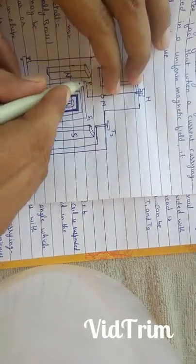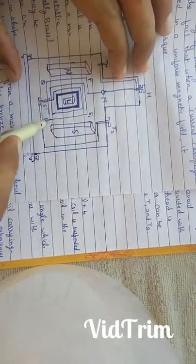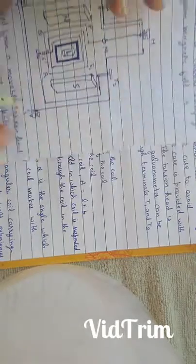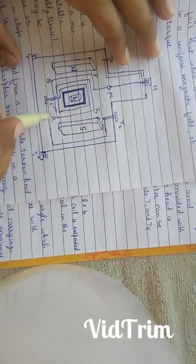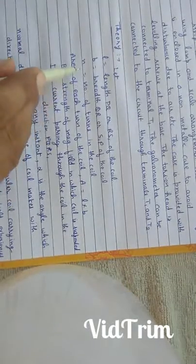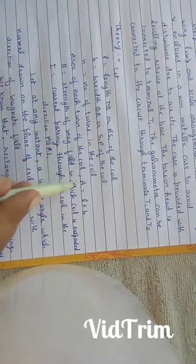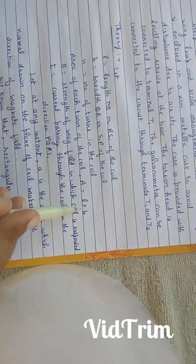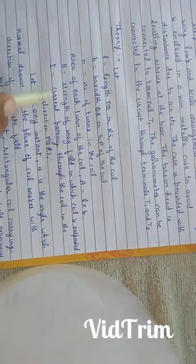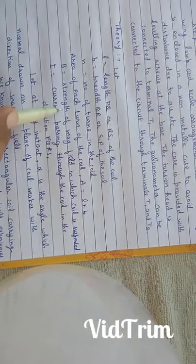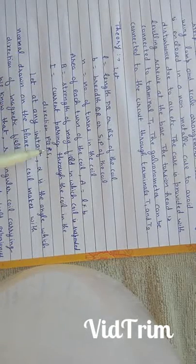Now, the theory. Let L is the length, L is equal to length PQ or RS1 of the coil. And B is the breadth QR or PS1 of the coil. N is the number of turns in the coil. Area of each turn of the coil A is equal to length into breadth. And B is the strength of the magnetic field in which coil is suspended. I is the current passing through the coil in the direction PQ or RS1.